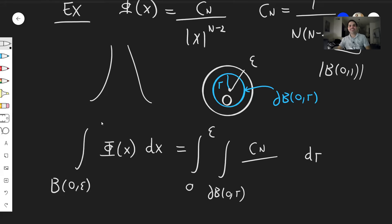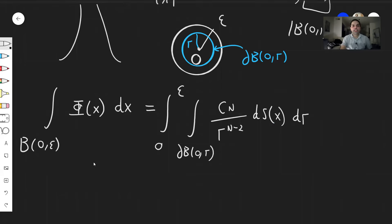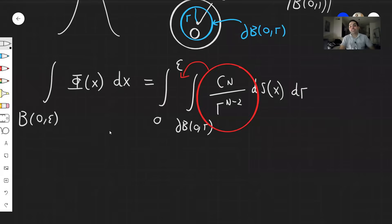All right, let's see what this becomes. So this is C_N, and on the sphere, the radius constant equal to r, so it's r to the N minus two, again, surface measure. So dS(x) dr, and again, the beautiful thing is, just like the last example, this whole thing comes out. It's crazy. I'm teaching you so much math in this little video. Isn't that awesome? So this comes out, and then we have this.